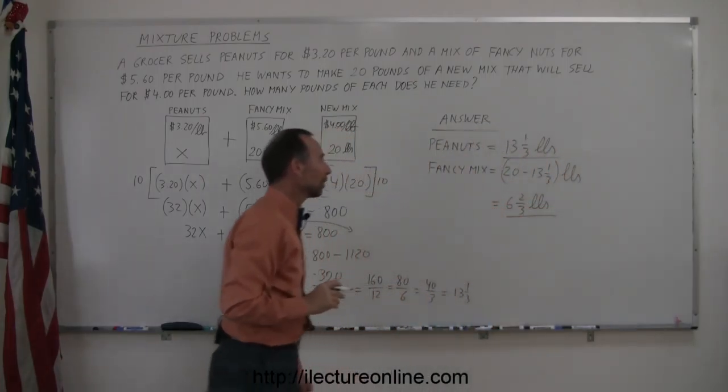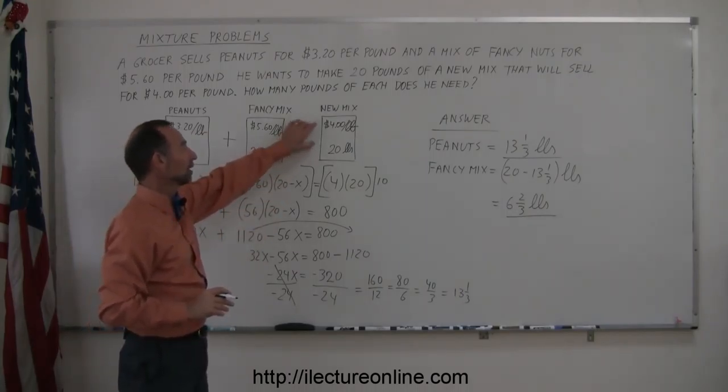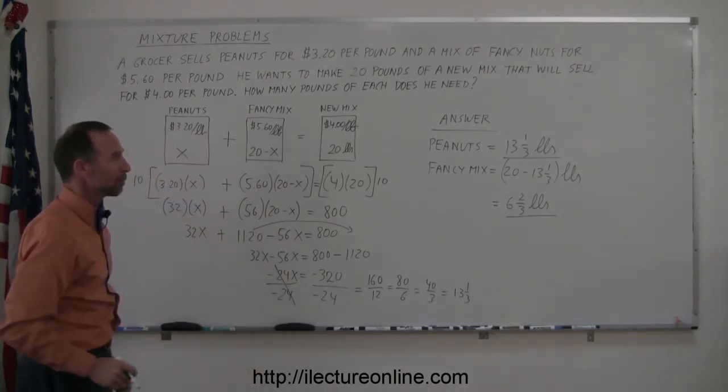So if we mix 13 and a third pounds of peanuts with 6 and 2 thirds pounds of the fancy mix, we'll come up with a new mix that will sell for $4 a pound, and we'll have 20 pounds of it. And that is how you do a problem like that.